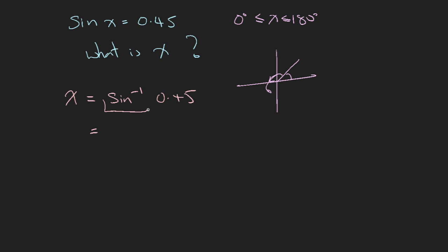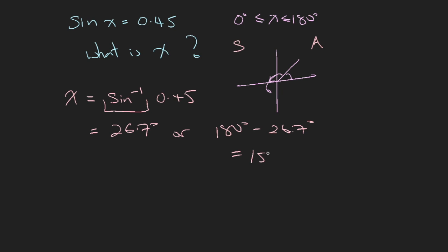If you press the calculator for sine inverse of 0.45, it will give you only one value — the acute angle — which is 26.7 degrees. Because sine is positive in both the first and second segments, x can equal 26.7 degrees or 180 minus 26.7 degrees, which equals 153.3 degrees. So sine of either 26.7 or 153.3 gives you 0.45 — there are two valid answers.